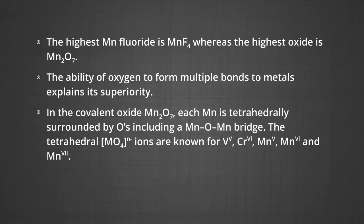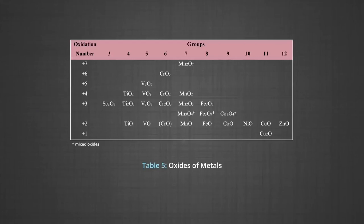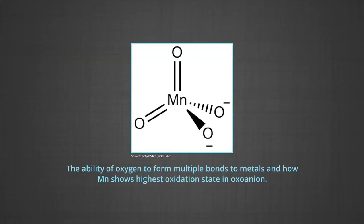The ability of oxygen to form multiple bonds to metals explains its superiority. In the covalent oxide Mn2O7 (manganese heptoxide), each manganese is tetrahedrally surrounded by oxygen including a Mn–O–Mn bridge. Tetrahedral ions are known for vanadium, chromium, and manganese in +5, +6, and +7 oxidation states. The table shows the oxides of these metals.